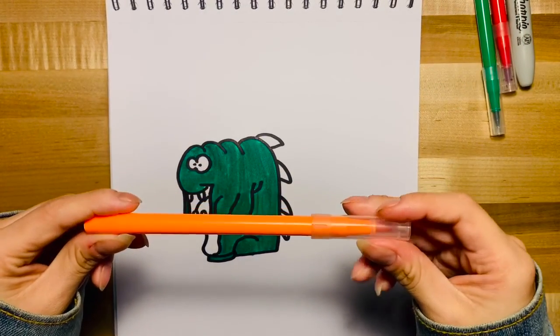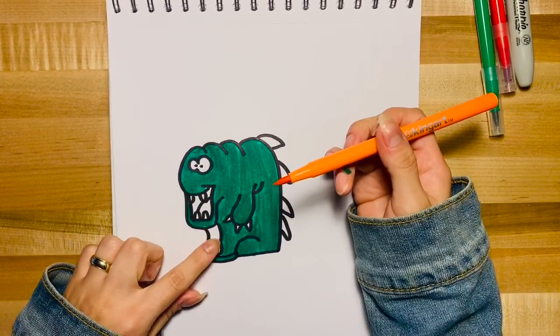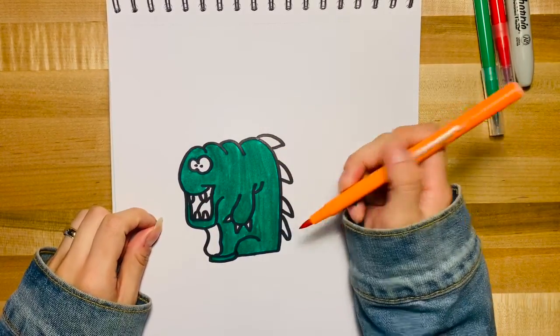All right, next we're going to use our orange. We're going to color in his belly, his nails, and his spikes.